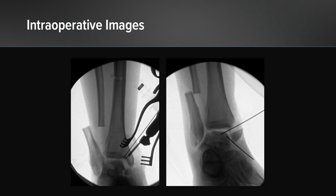Here we see the fibular osteotomy performed after already preparing the fibula for the nail. This image also shows the osteotomy of the medial malleolus being performed concurrently.